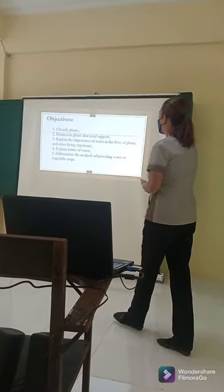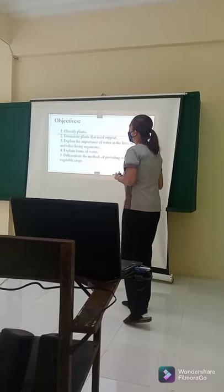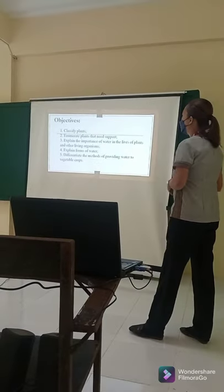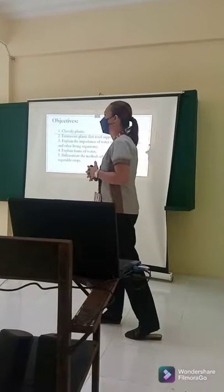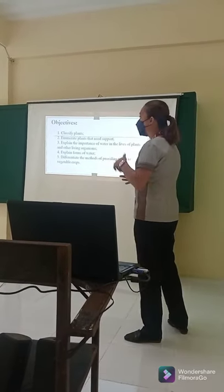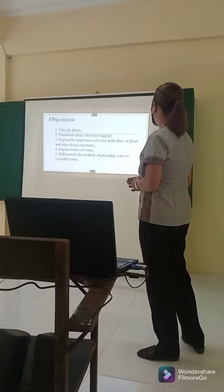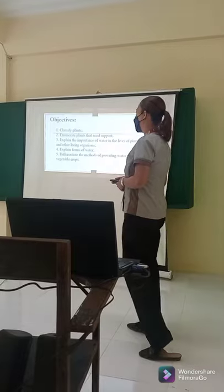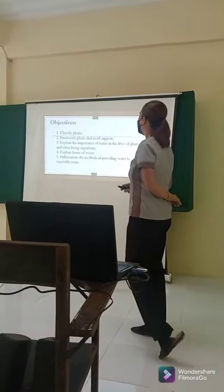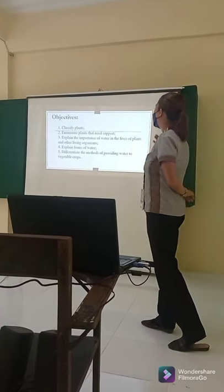Before we start our topic, let me enumerate first the objectives. First, classify plants. Second, enumerate plants that need support. Third, explain the importance of water in the lives of plants and other living organisms. Fourth, explain the forms of water. And number five, differentiate the different methods of providing water to vegetable crops.